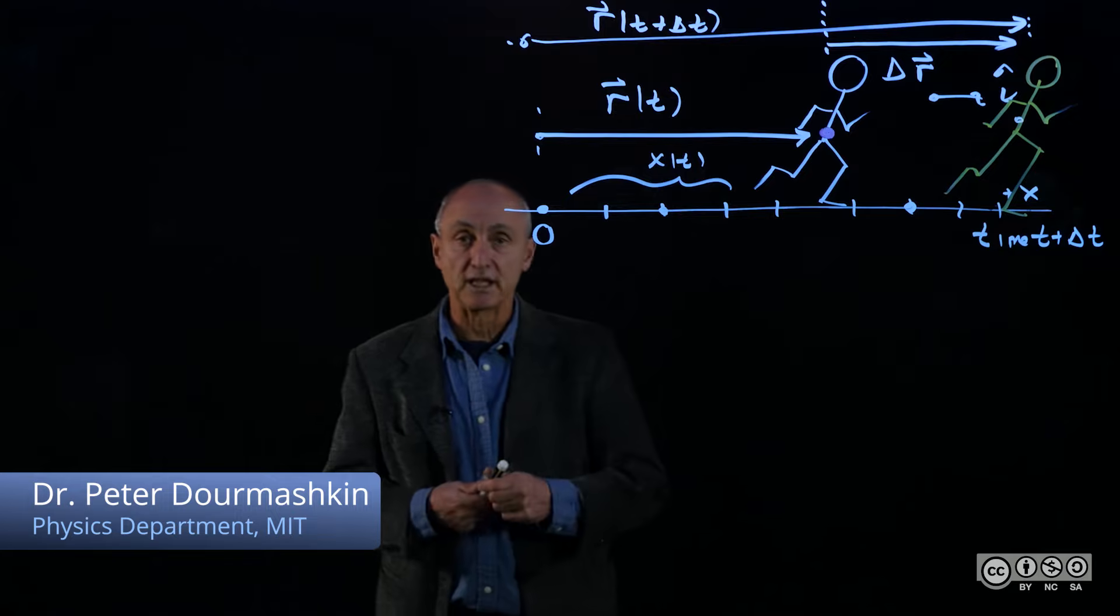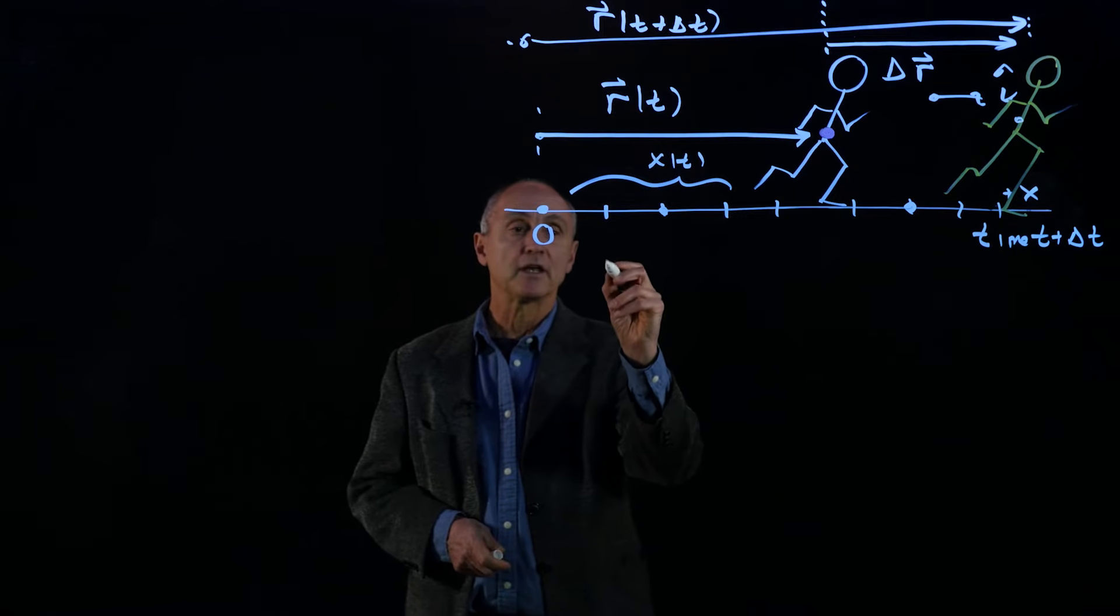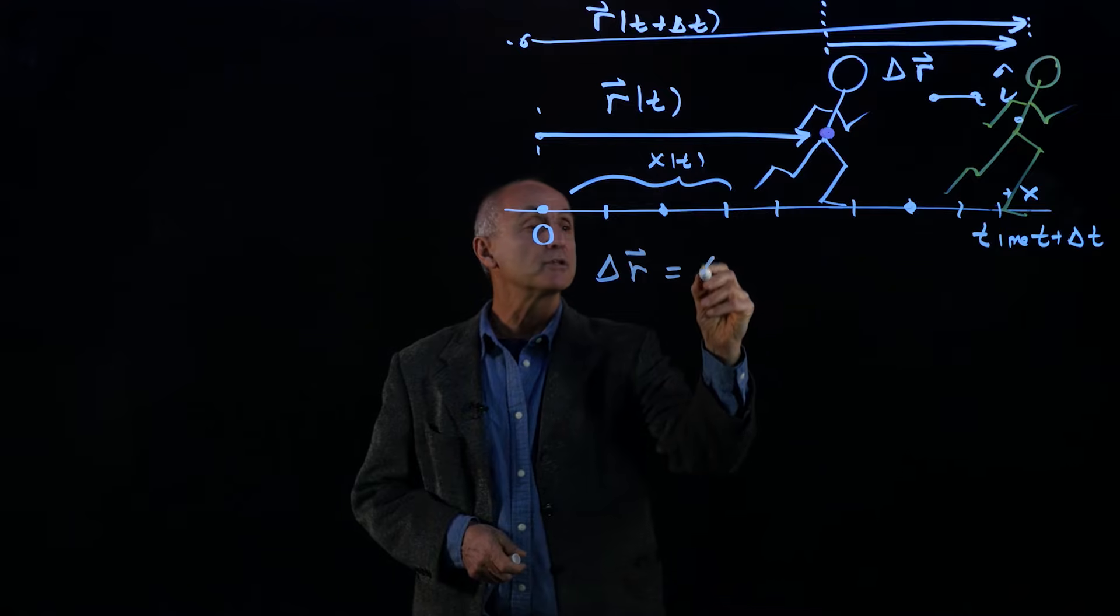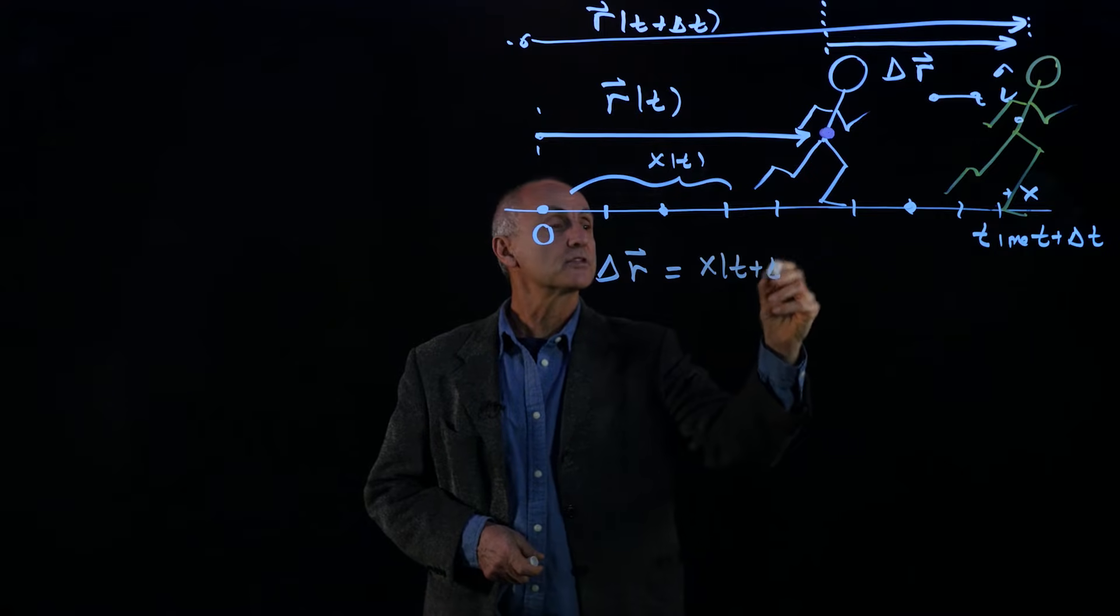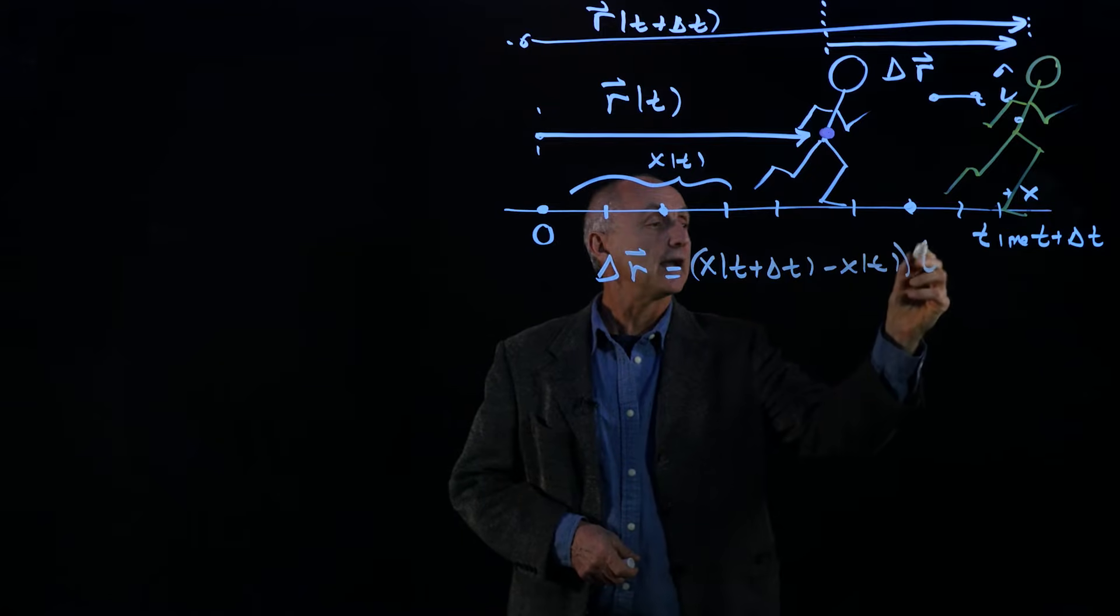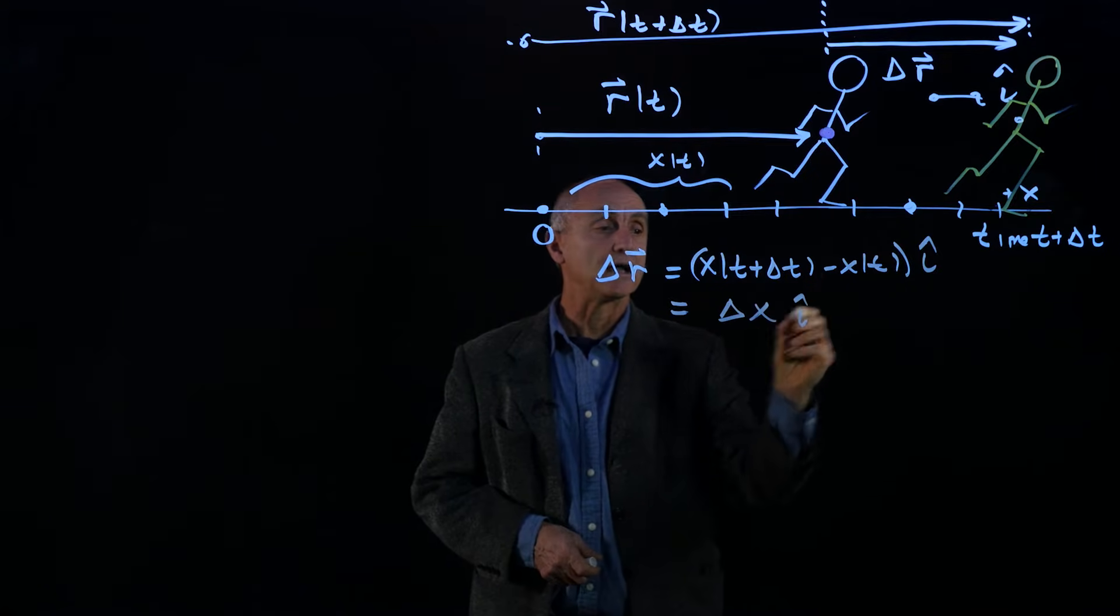Now that we've described the displacement of our object, remember that our displacement vector delta r in this time interval was x of t plus delta t minus x of t i hat, which we denoted as delta x i hat.